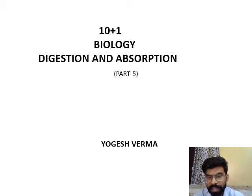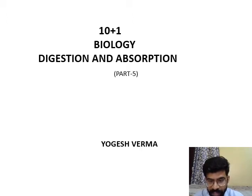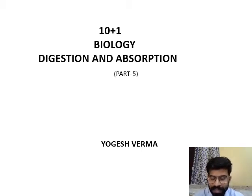Note that there are five steps of nutrition in human beings — this was also covered in your 10th class. The first step is ingestion, the second step is digestion, the third step is absorption, the fourth step is assimilation, and the fifth step is ejection. Ingestion means intake of food.